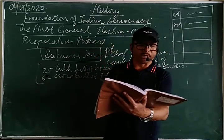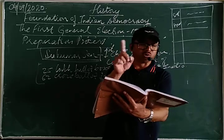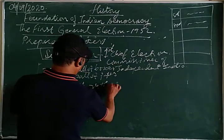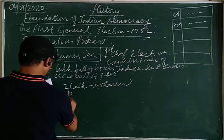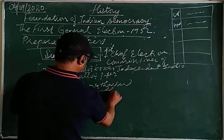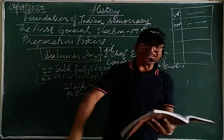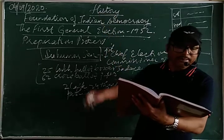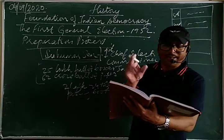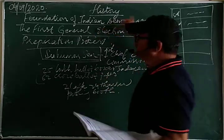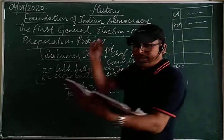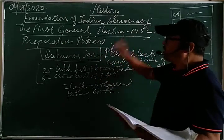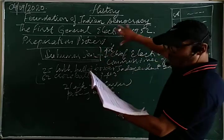For every 1,000 voters there was one polling booth, and a total of 2,24,000 polling booths were set up. The entire election process was manned by 10 lakh government officials, who were appointed and responsible for taking care of the entire process of this election.